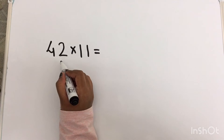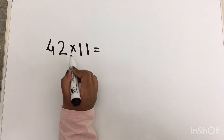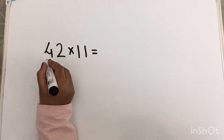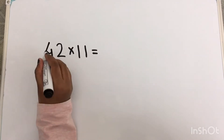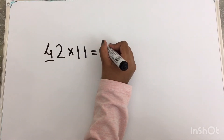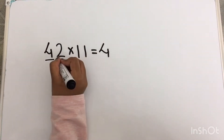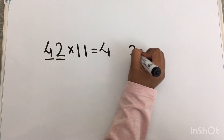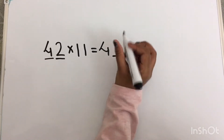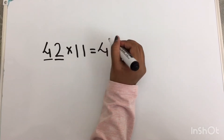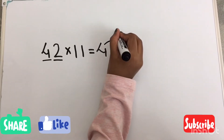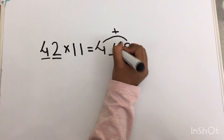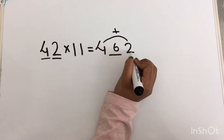Now we will see how to multiply 42 into 11 in an easy way. I am going to write the tens digit 4 first and the units digit 2 last. In the middle, I am going to add both these numbers. So 4 plus 2 equals 6. The answer is 462.